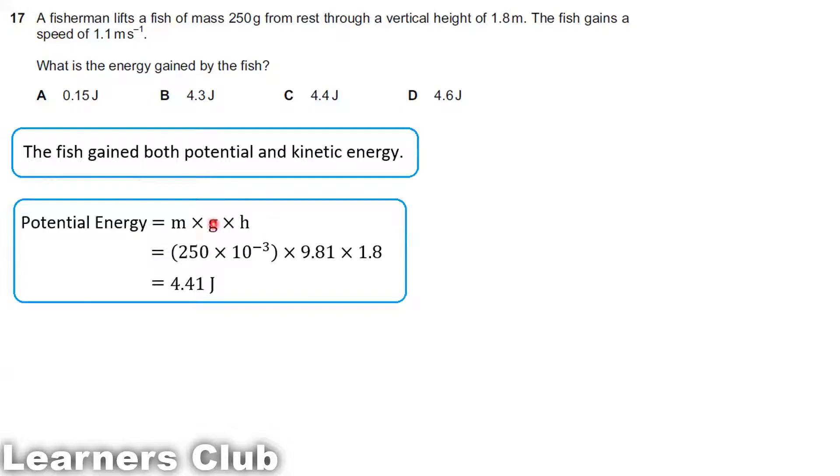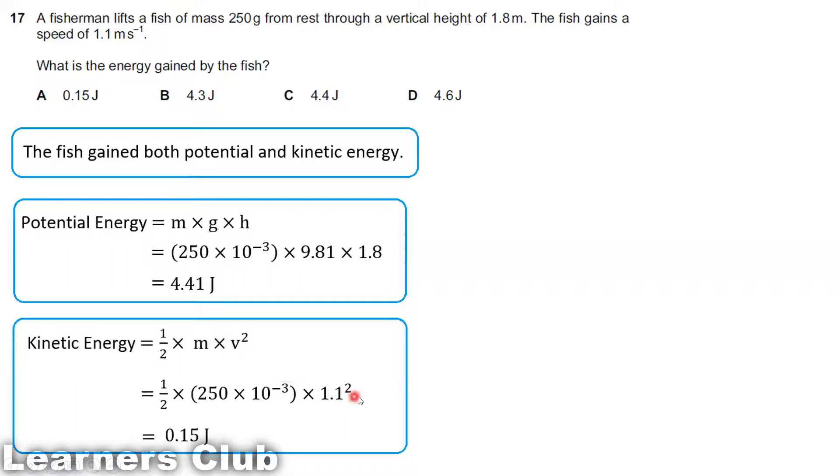Potential energy is mgh. Mass is 250 grams converted to 10 to the power minus 3. G is 9.81. H is the height, 1.8 meters. The answer you get is 4.41 joules. Kinetic energy is half mv squared. The speed is 1.1, so half mv squared. I'm getting 0.1 joule. To get the gain in energy by the fish, you need to add both of them. When you add you get 4.62 joules. Therefore the option is D.